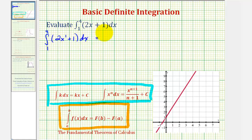The antiderivative of two X to the first would be two times X to the second. We add one to the exponent, then divide by the new exponent, plus the antiderivative of one, which would be one times X, or just X.